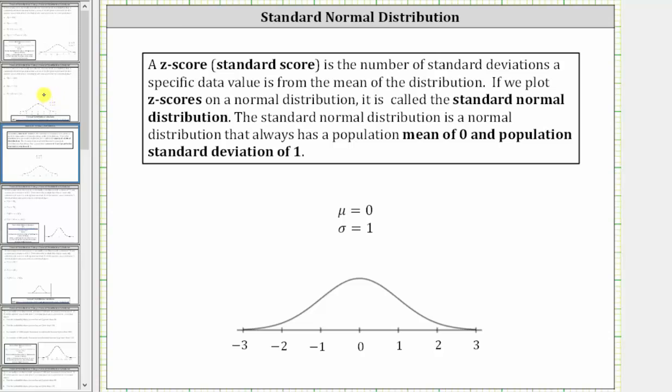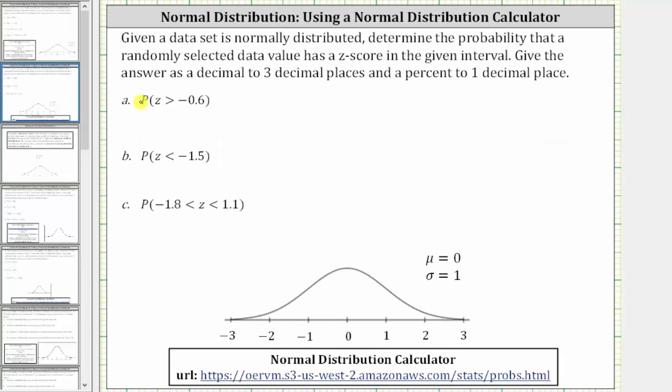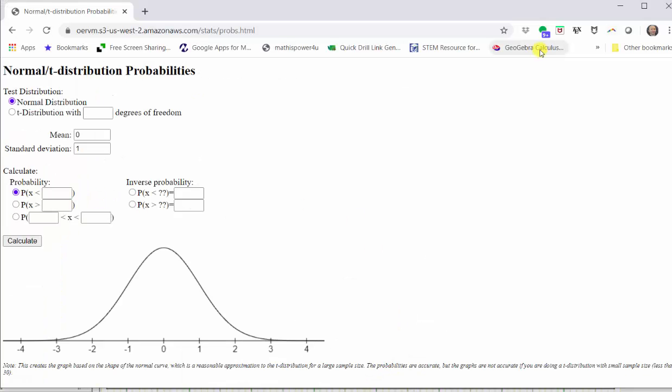So going back to our examples, we will first find the probability the z-score is greater than negative 0.6. Going to the calculator, at the top, we select normal distribution. Because we are dealing with z-scores, we know the mean is zero and the standard deviation is one. Next, to determine probabilities, we use these three options.